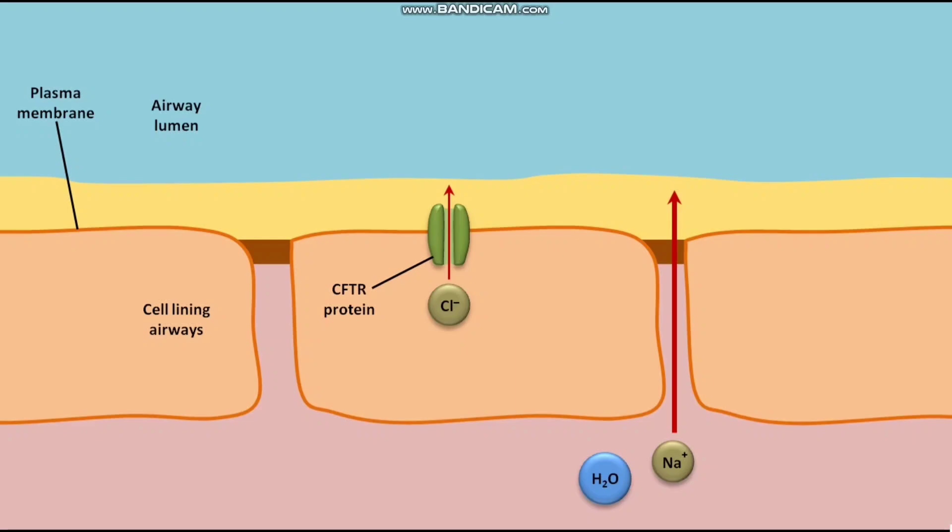Osmotic pressure causes water to follow the sodium ions and chloride ions. As a result, a dilute salt solution is secreted. The water that moves into the lumen provides vital hydration to the mucus lining of the air passages.